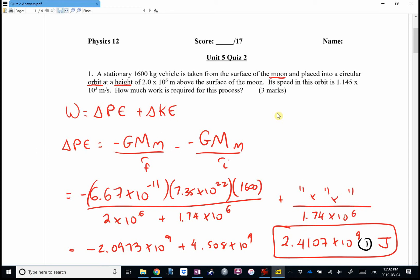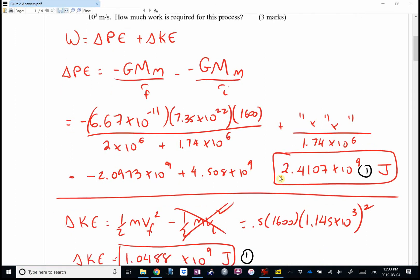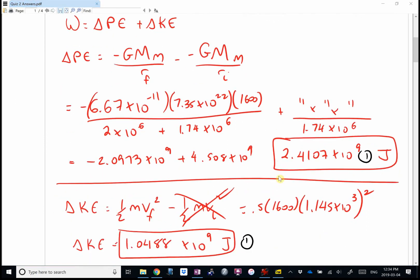This question should be worth more marks than just three. Change in kinetic. Is there a change in kinetic? If we're in orbit, there has to be some kinetic energy. I went final minus initial. It does say a stationary vehicle. We decided that if we're on the earth, we're launching from the North Pole, Superman's Fortress of Solitude. The moon has a North Pole as well. When I carefully crunched the kinetic energy, you get 1.0488 × 10^9 joules.